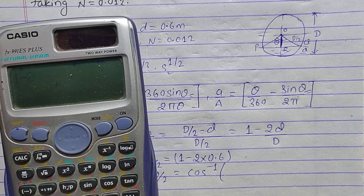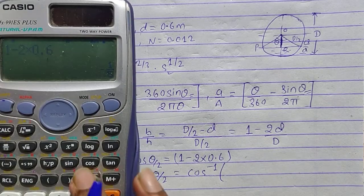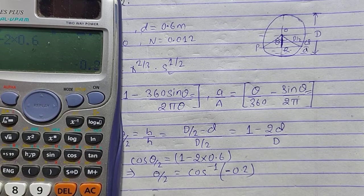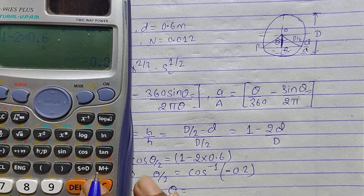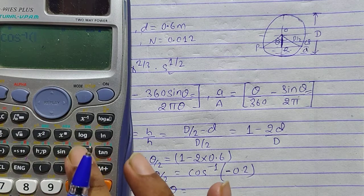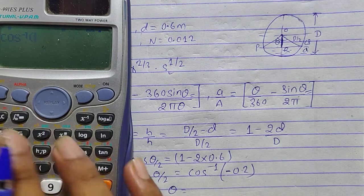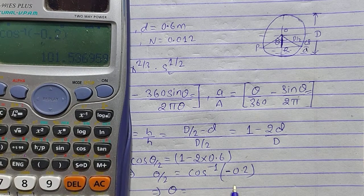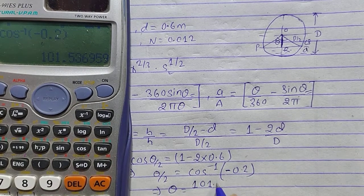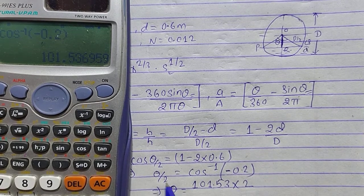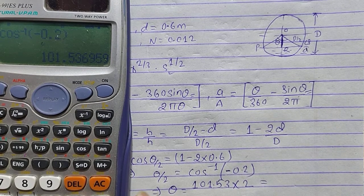Taking the inverse cosine: θ/2 = cos⁻¹(−0.2) = 101.53°. Multiplying both sides by 2, the final value of theta equals 203.07 degrees.